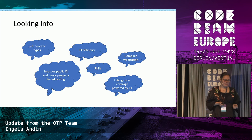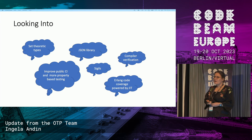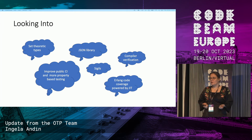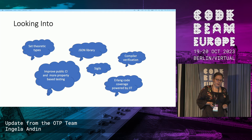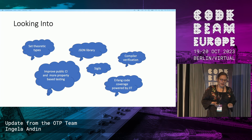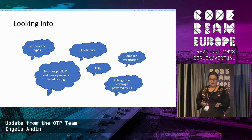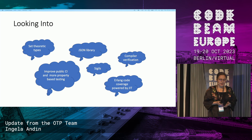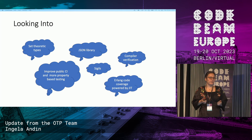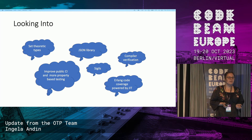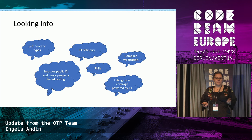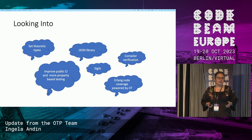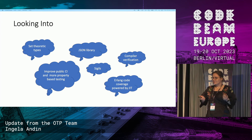Looking into the future, we are interested in set-theoretic types and following closely what Elixir is doing with this. We are thinking of maybe providing a JSON library, we want to improve our public continuous integration, and we want to add more property-based tests. We're also looking into CGLS compiler verifications and maybe having online code coverage empowered by the JIT. Most of this will be done in cooperation with the research community and the open source community, and you can follow discussions on online forums and our GitHub pull requests and participate.